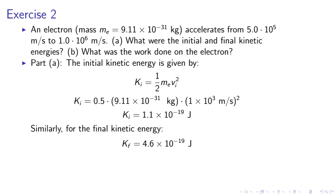Part A. We can simply find the initial kinetic energy from Ki equals to half MeVi squared. Solving, we obtain the initial kinetic energy is equal to 1.1 times 10 to the minus 19 joules. For the final kinetic energy, we obtain 4.6 times 10 to the minus 19 joules.